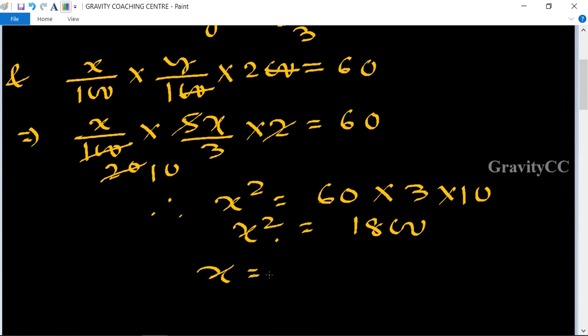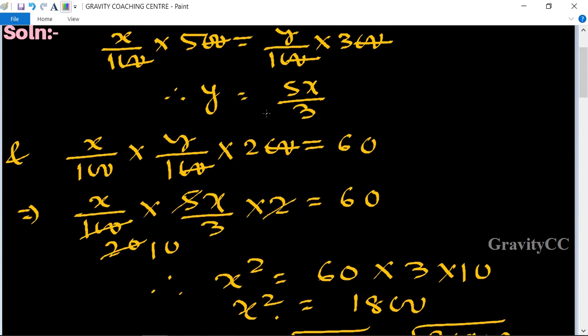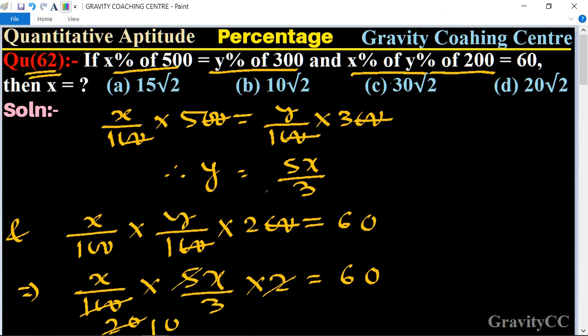So x = √1800 = √(900 × 2). Since √900 = 30, we get x = 30√2, which is the required answer. Option C is correct.